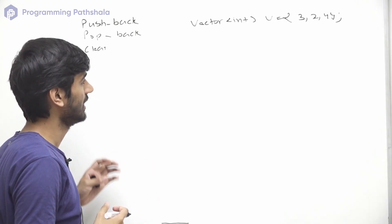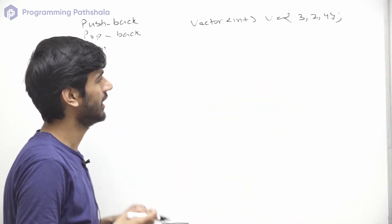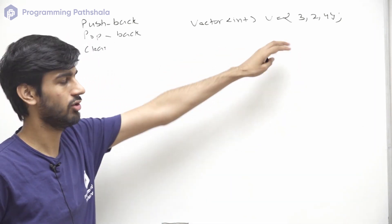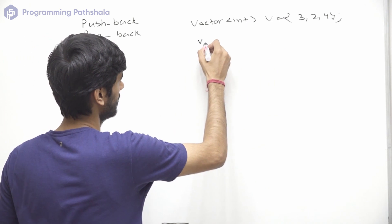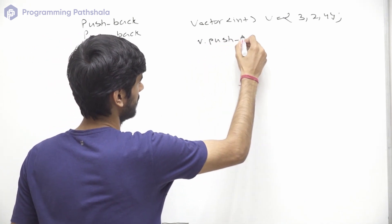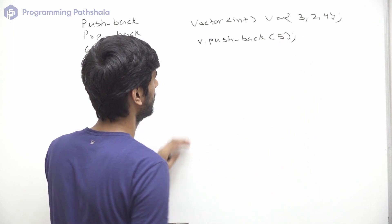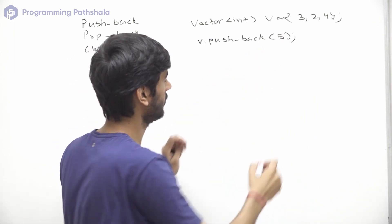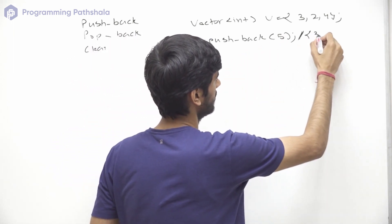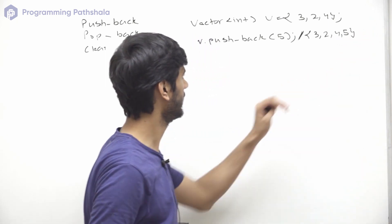For example, let's say we have this vector and we want to insert 5 at the end. We can do that using the push back operator. So now the vector will look something like this: 3, 2, 4, and 5.